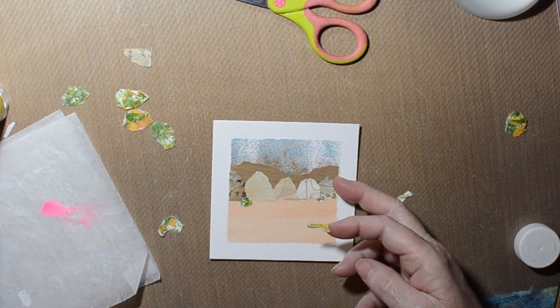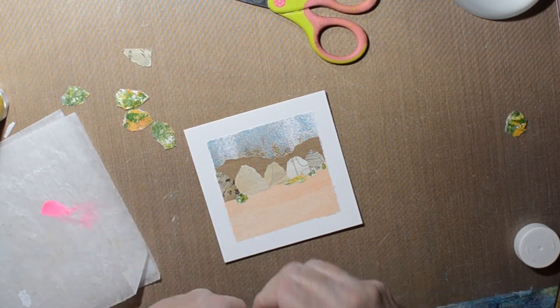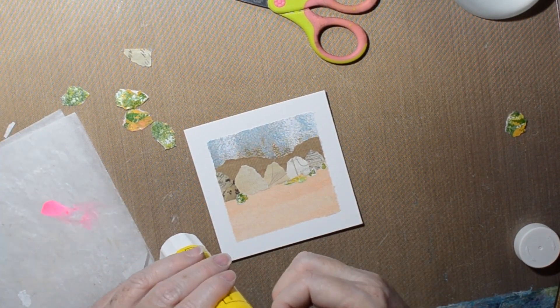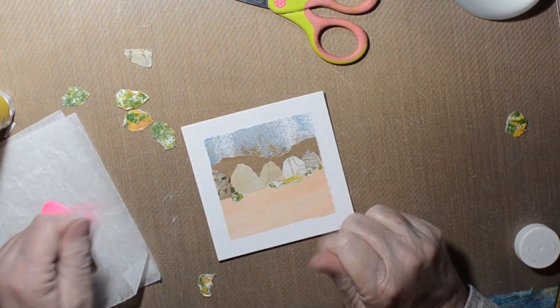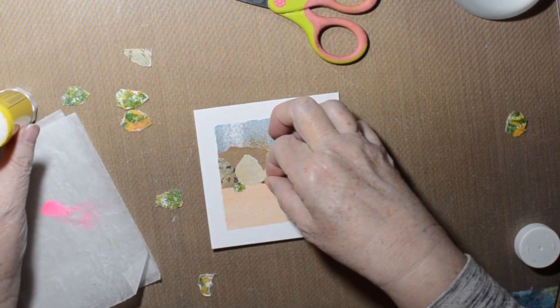So, Death Valley is pretty dry, so I just did a little bit of my kind of brownish rice paper at the bottom. There was a little bit of greenery, so I'm sticking on some bits of green to look like little bushes.